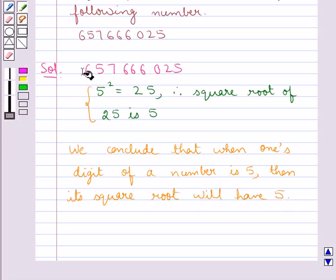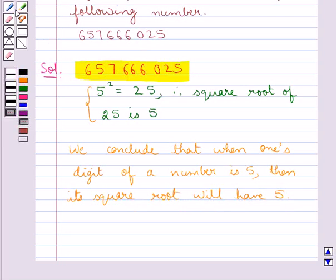Now the number given is this, that is 657666025. Now the one's digit in this case is 5.